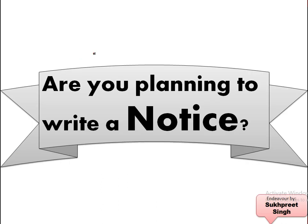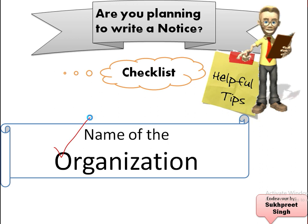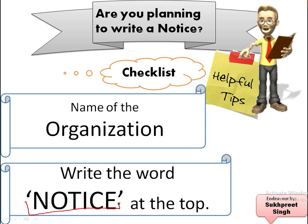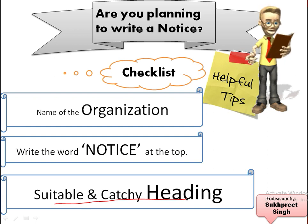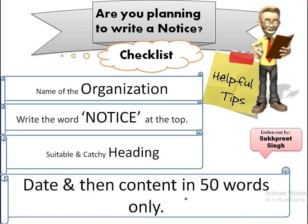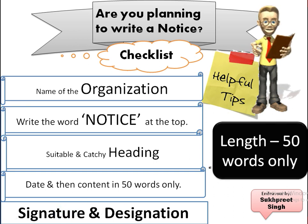Are you planning to write a notice? If you do, you should follow the checklist. First of all, the name of the organization or the issuing agency is written, and then we write the word NOTICE in all caps. Then a suitable and catchy heading is given — the heading should be such that the reader comes to know from the heading itself what the notice is about. Then date is given, then contents in 50 words only — not more than that. Don't forget signature and designation, and respect the word limit of 50 words only.